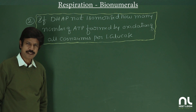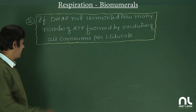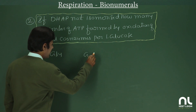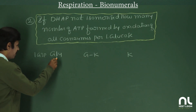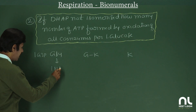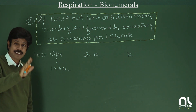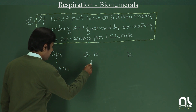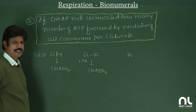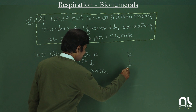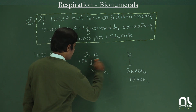Second question: if DHAP is not isomerized, how many ATP are formed by oxidation of all co-enzymes per one glucose molecule? Considering glycolysis, the link reaction, and the Krebs cycle for one G3P: glycolysis yields 1 NADH; the link reaction yields 1 NADH; Krebs cycle yields 3 NADH and 1 FADH2. We are not considering substrate level phosphorylation here.